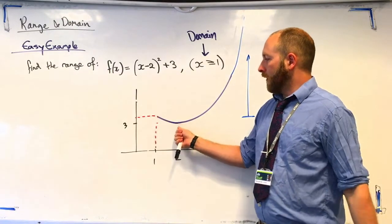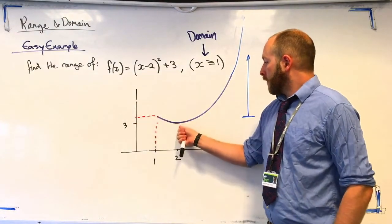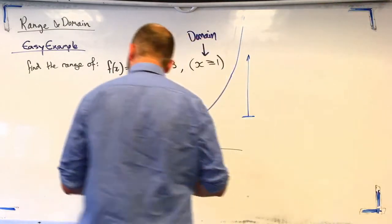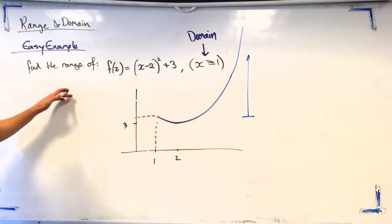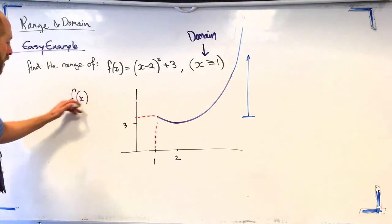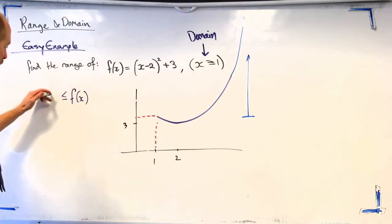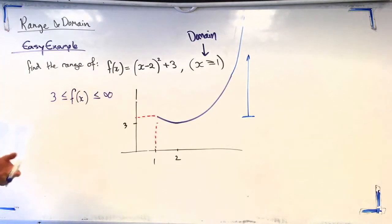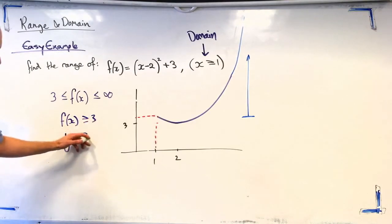So, our lowest y value available is 3. Greatest value is infinity. So, our range for this one is going to be f of x is greater than or equal to 3, less than or equal to infinity. Or we could write that f of x is greater than equal to 3, or y is greater than equal to 3.